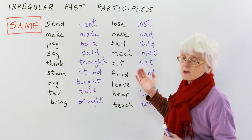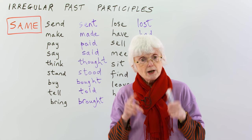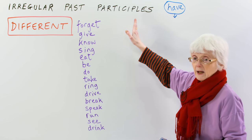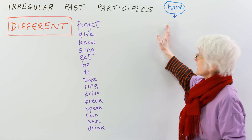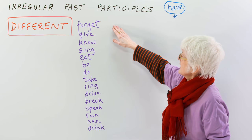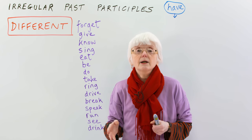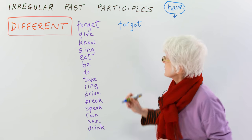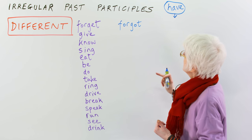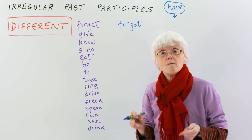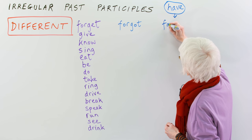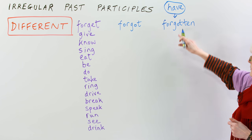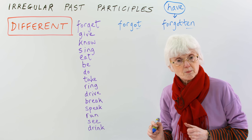Those are all the verbs that stay the same. Now let's look at the ones that change in the past participle. To forget: yesterday I forgot — E changes to O. And in the present perfect: I have forgotten. That's where it changes — I have forgotten.